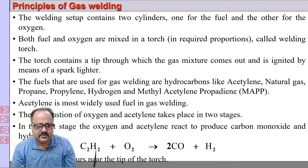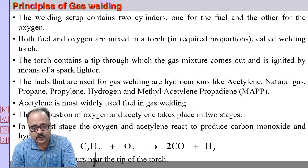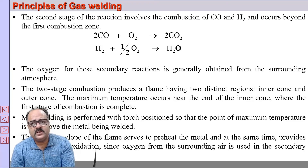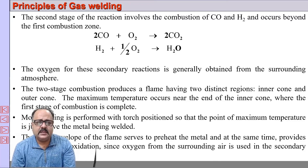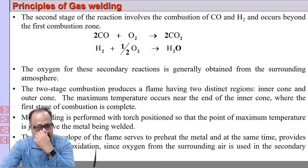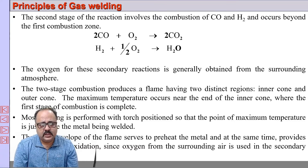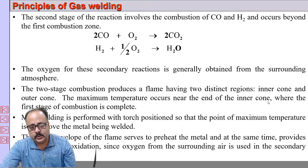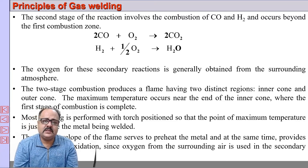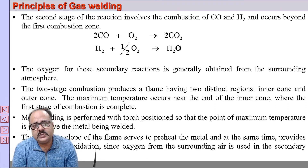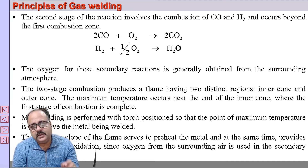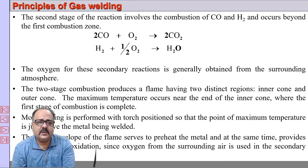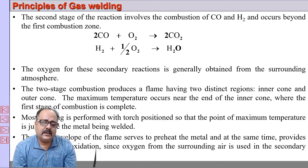The combustion takes place in two stages. The first-stage reaction: C₂H₂ + O₂ gives CO + H₂ (carbon monoxide and hydrogen). This occurs at the tip of the torch. The secondary reaction involves the carbon monoxide reacting with atmospheric oxygen to form CO₂, and the hydrogen forming H₂O. This two-stage reaction produces a flame with two zones — the inner zone having the maximum temperature, and the outer cone — with maximum temperature near the inner zone.